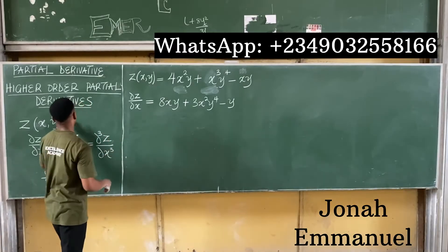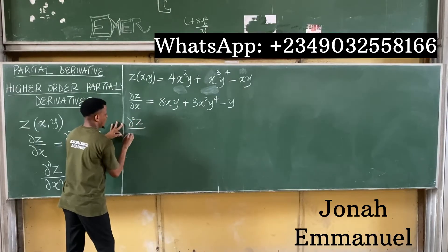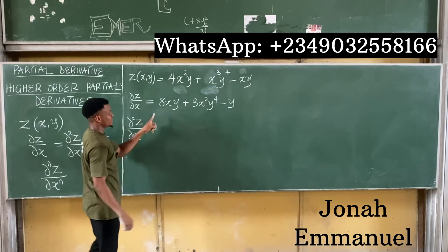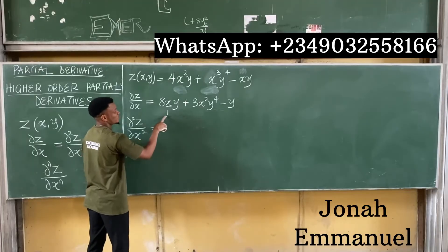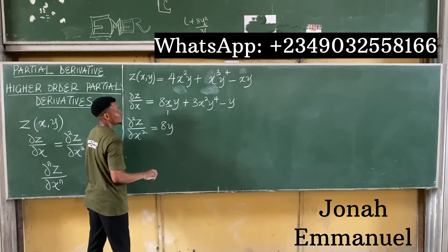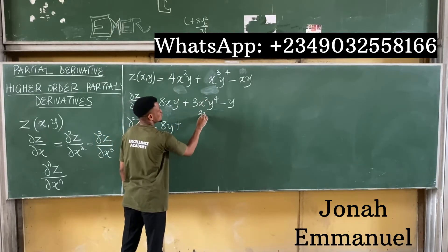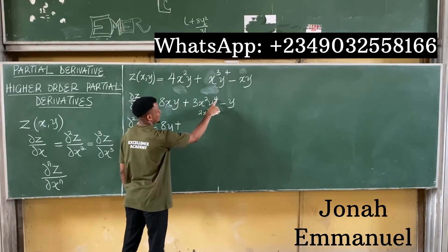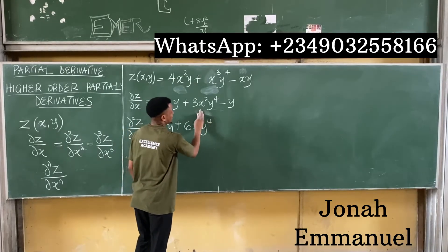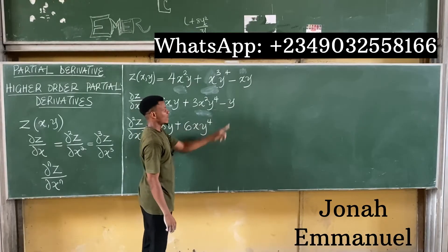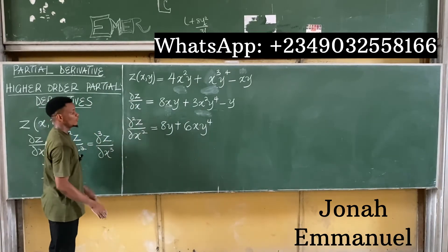Let's get the second partial derivative. Partial squared z all over partial x squared: differentiating x in 8xy gives 1, so 8 times 1 times y gives 8y. Then differentiating x squared in 3x squared y to the power 4 gives 2x; 2x times 3 times y to the power 4 gives 6xy to the power 4. There is no x in the minus y term, so differentiating gives 0. So partial squared z over partial x squared equals 8y plus 6xy to the power 4.